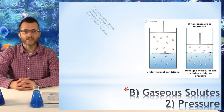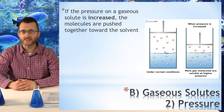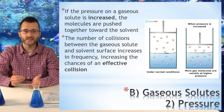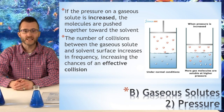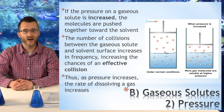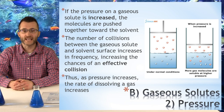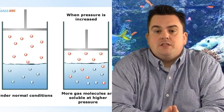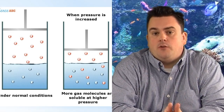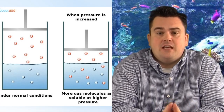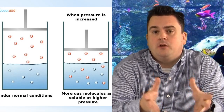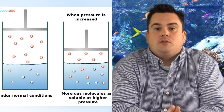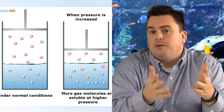Gaseous solutes — pressure. If the pressure on a gaseous solute is increased, the molecules are pushed together toward the solvent. The number of collisions between the gaseous solute and the solvent surface increases in frequency, increasing the chances of an effective collision. Thus, as pressure increases, the rate of dissolving a gas increases. Looking at the picture, the piston on the left has low pressure; as you push it down, pressure builds and forces the gas to collide with the surface more often, making it more soluble.